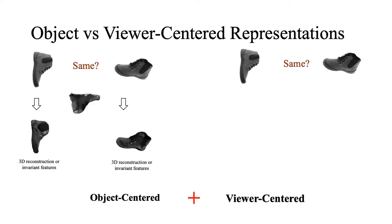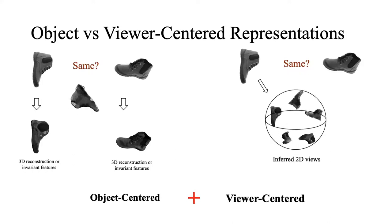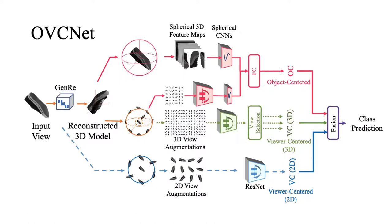On the other hand, viewer-centered representation depends on 2D view-dependent features for recognition, such as matching. Our network structure is quite straightforward. It contains three branches, which takes care of the 2D-centered features, the 3D view-centered features, and 3D object-centered features, respectively.